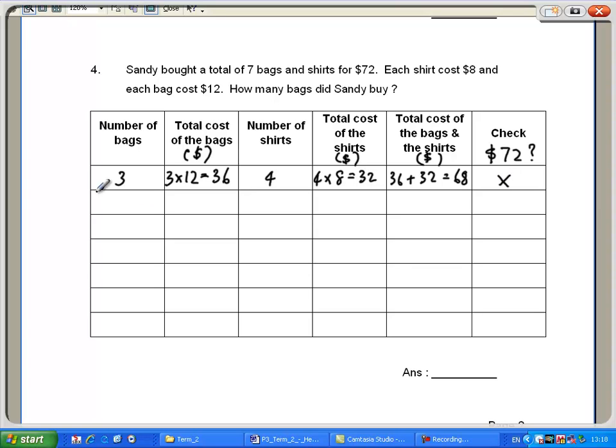Since the bags are more expensive, let's increase it to 4. So, she would have bought 7 minus 4, 3 shirts. Let's calculate the cost.